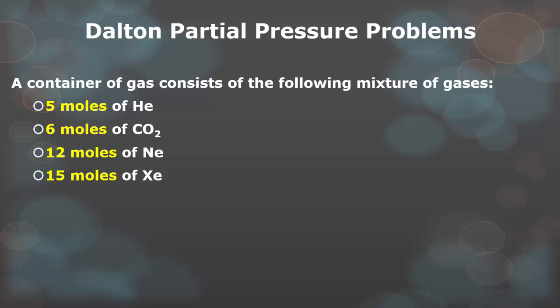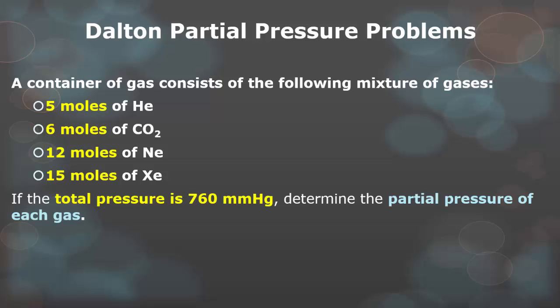So here's an example. A container of gas consists of the following mixtures of gases. If the total pressure is 760 millimeters of mercury, we're going to now determine the partial pressure of each gas. See how we cannot find each partial pressure without using those moles? That's why we're going to go back and use that formula. First thing you're going to want to do is add up all the moles.